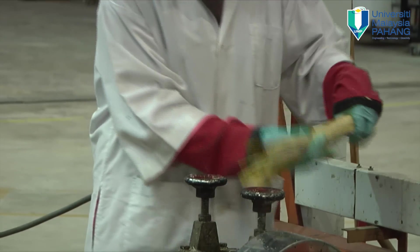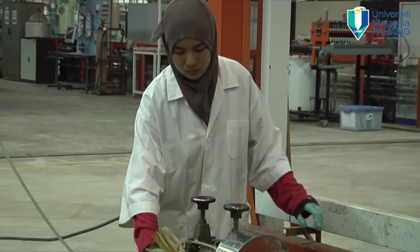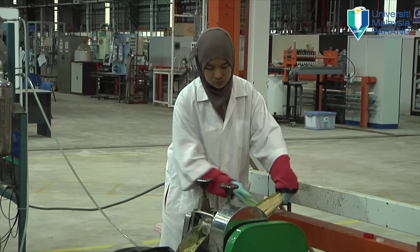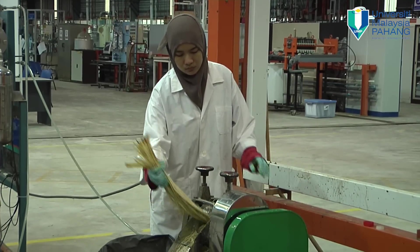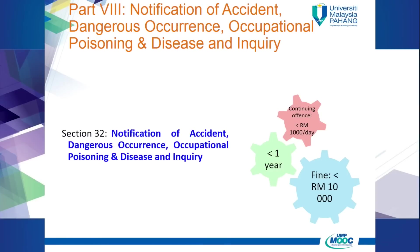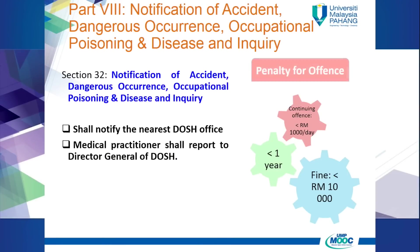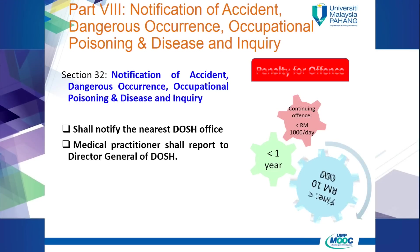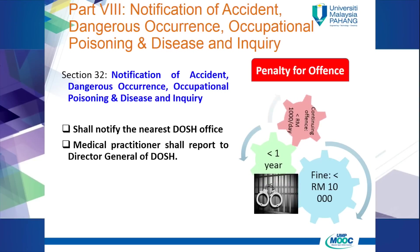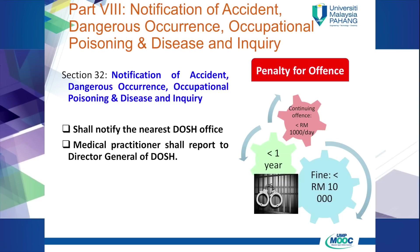Section 32 emphasizes notification of accident, dangerous occurrence, occupational poisoning and disease, and inquiry. Any act or omission which contravenes any provision of this act can be punished with a penalty of 10,000 Malaysian Ringgit and/or one year imprisonment. If a continuing offense occurs, 1,000 Malaysian Ringgit per day or part of a day if the offense continues after conviction.